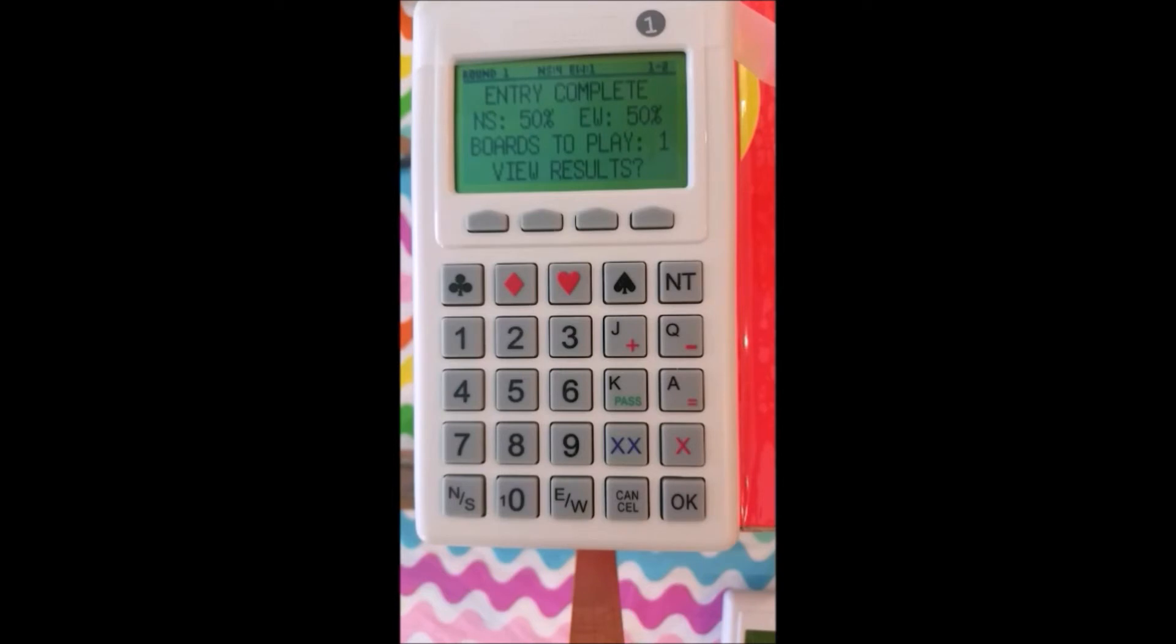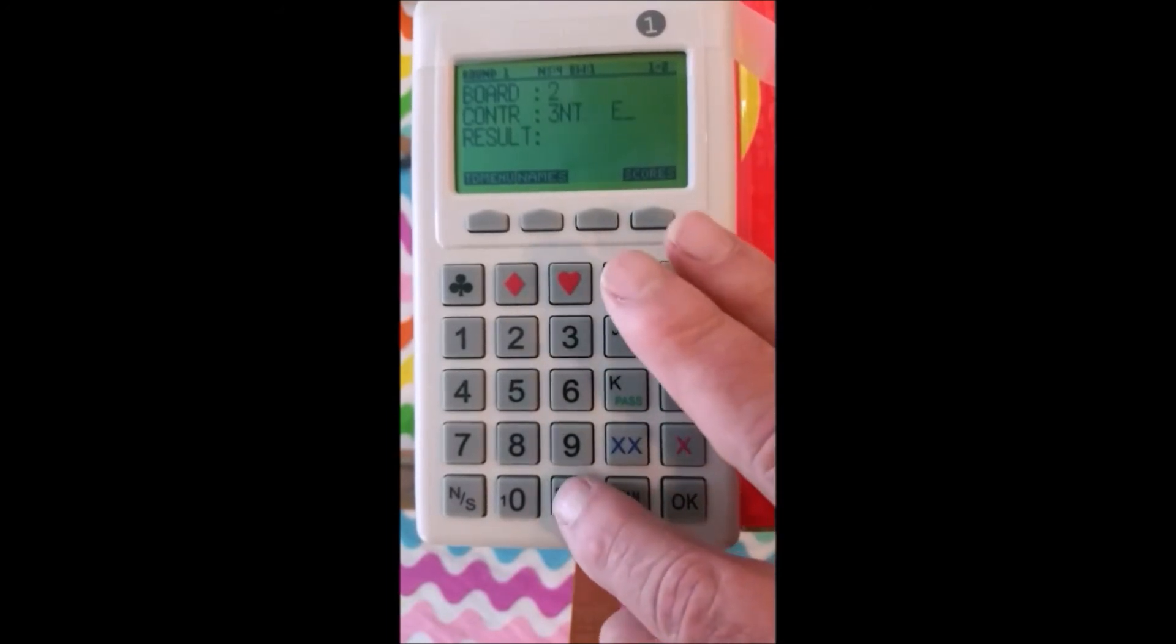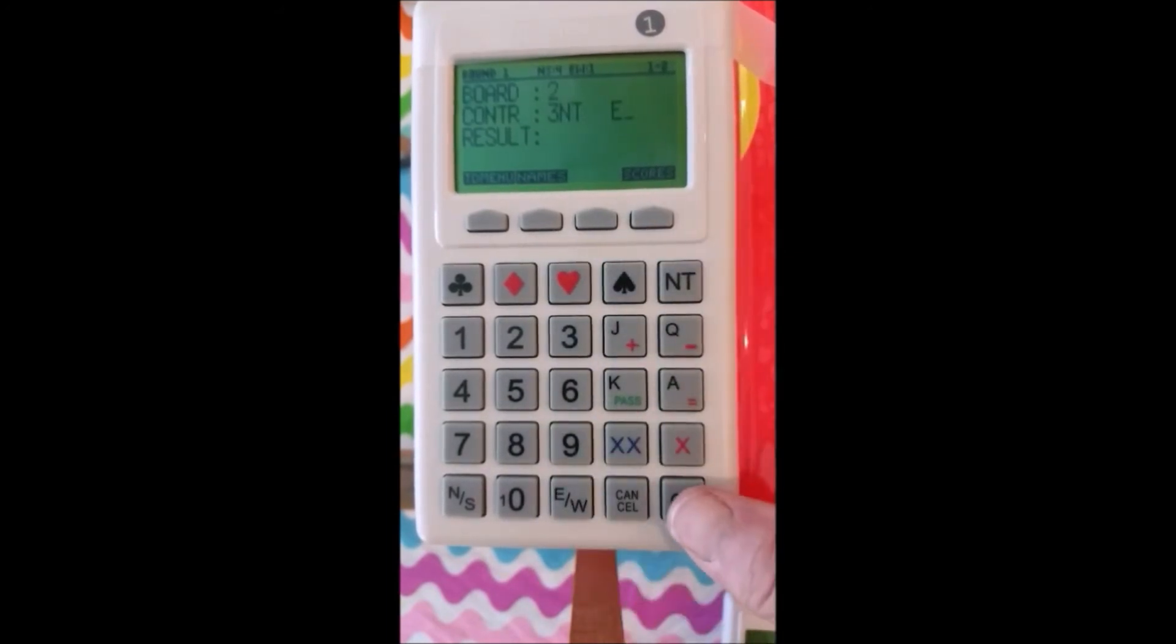And it also gives you a percentage on the boards that have been played so far. Hit OK. It'll show us what other boards have done. No other boards. It takes us to board two. OK, board two. Again, we enter the contract. For instance, I'll say that the contract was bid at three no trump in the East. I'll say OK. And the results are he made three. So I'll hit three.